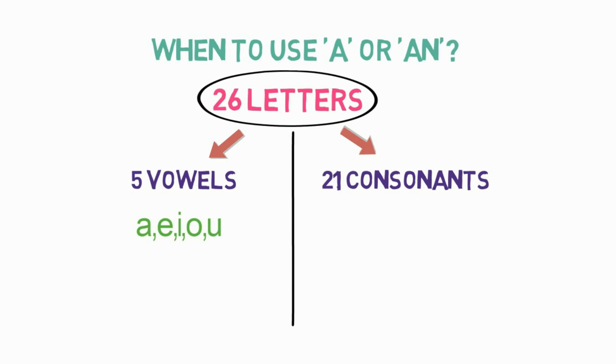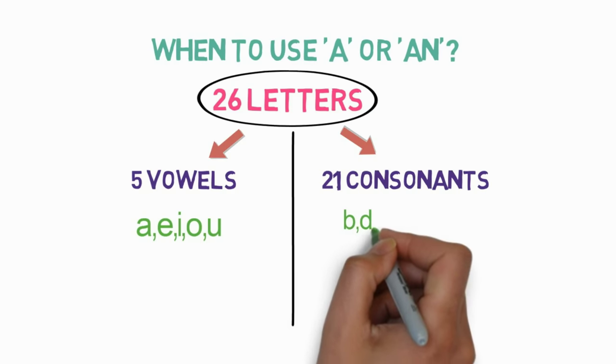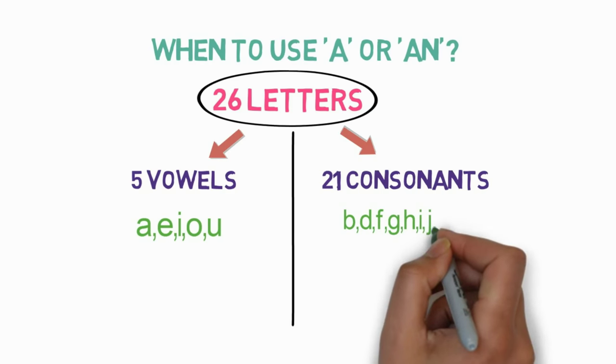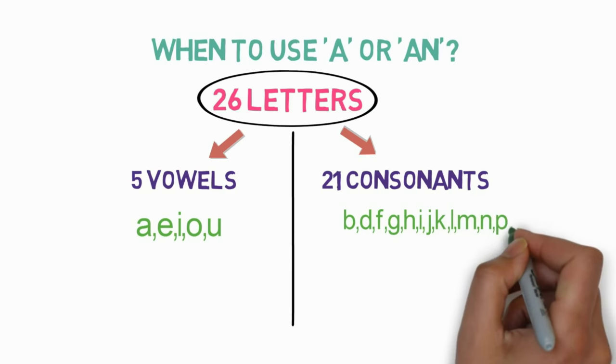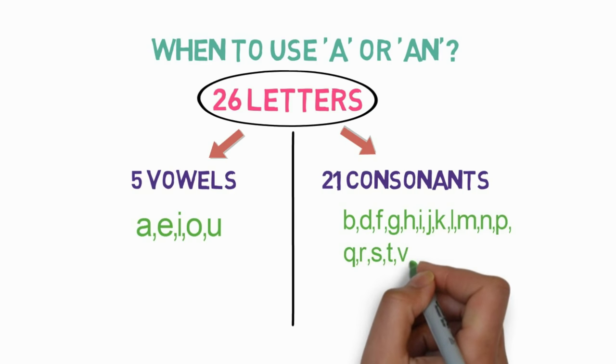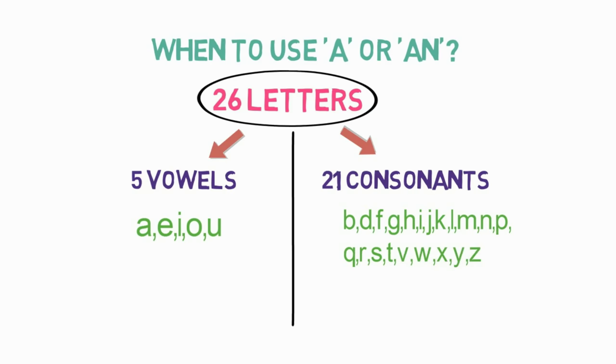The remaining 21 consonants are B, C, D, F, G, H, J, K, L, M, N, P, Q, R, S, T, V, W, X, Y, Z.